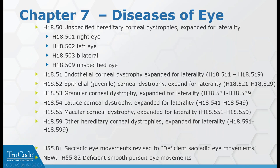In the eye chapter, corneal dystrophy codes have been expanded extensively for laterality across all different categories of dystrophy types. The only other change is a code renamed to deficient saccadic eye movements, which is an anomaly of smooth pursuit eye movements that the optometry association requested be tracked with a specific code.